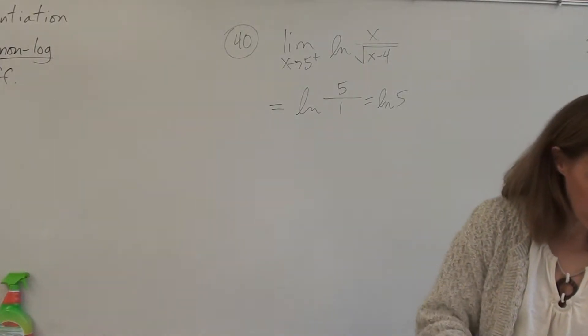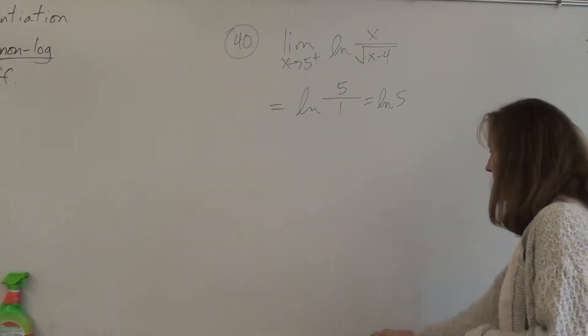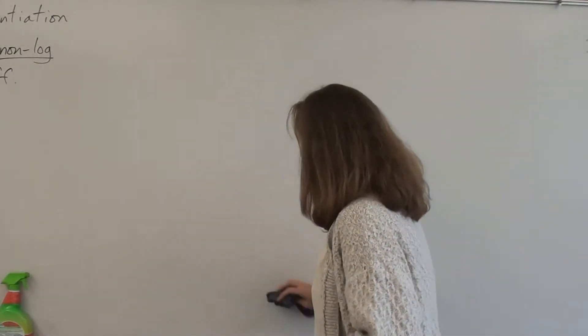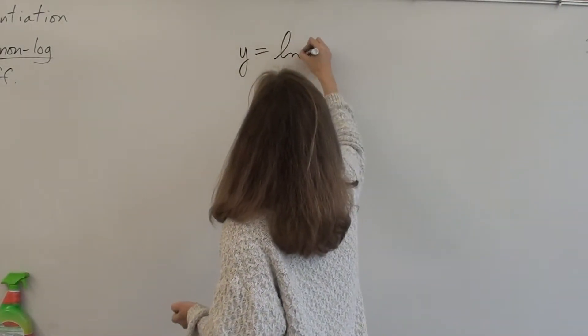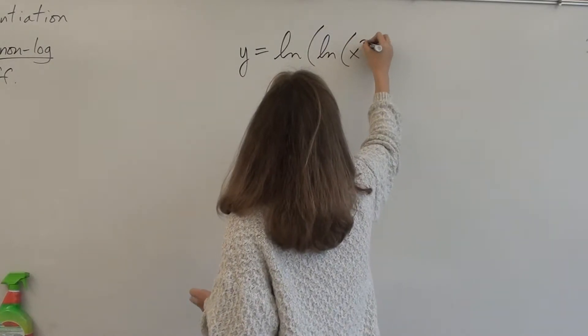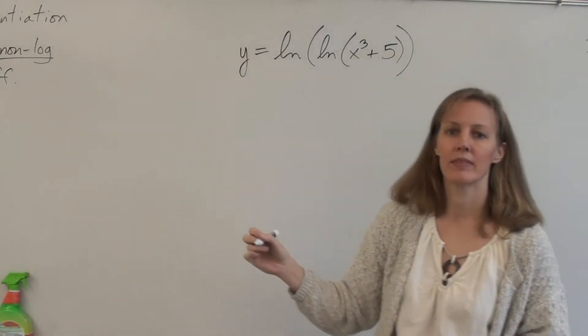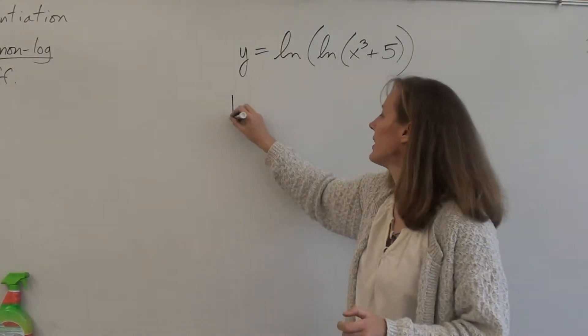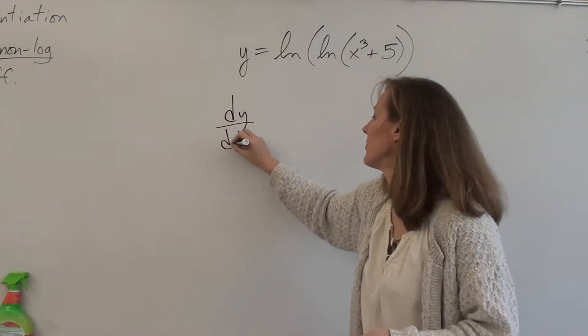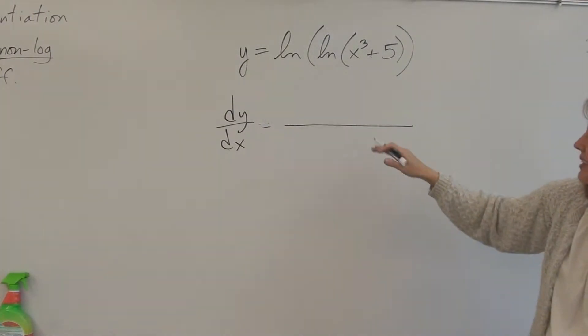Okay, the next problem that was requested was 55, which is a natural log of a natural log. Okay, so I'm going to make up my own for this one. We're going to do y equals ln of ln of x cubed plus 5. The Illuminati, the Illuminati.